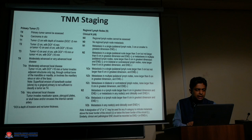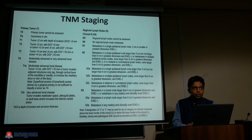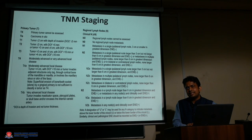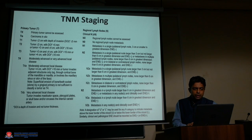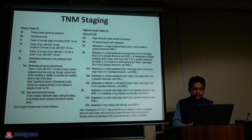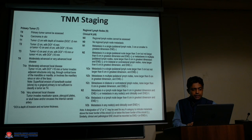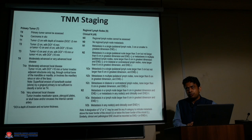T4B is very advanced disease involving the masticator space, pterygoid plates, skull base, or encasing the internal carotid artery. For nodal classification: NX cannot be assessed; N0 is no regional metastasis; N1 is a single node 3 cm or less without extranodal extension (ENE). N2 is subdivided: N2A is 3–6 cm without ENE; N2B is multiple ipsilateral nodes none larger than 6 cm without ENE; N2C is bilateral or contralateral nodes under 6 cm. N3A is a node more than 6 cm; N3B includes any node with extranodal extension.